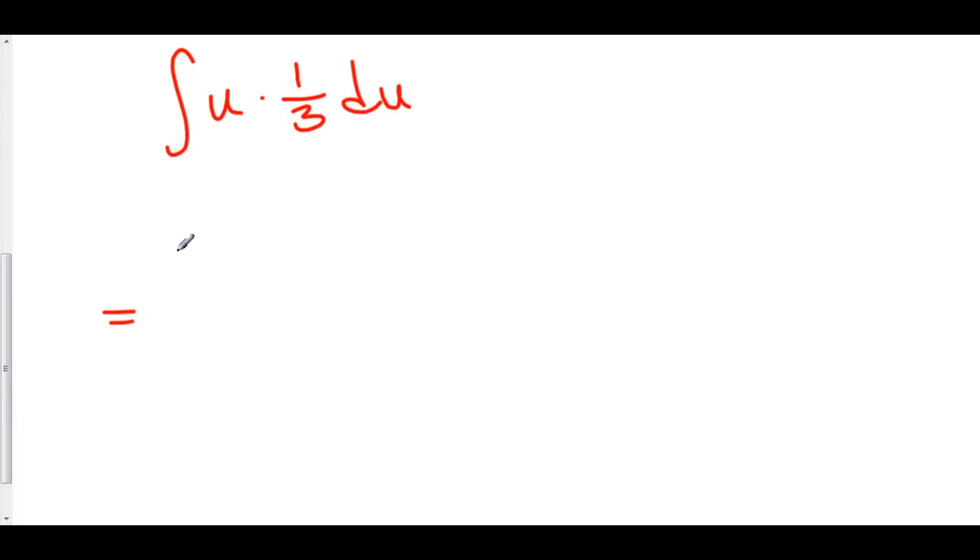So, here we have 1 third times the integral of u du. Well, this is equal to 1 third. The anti-derivative of u is 1 half u squared plus c.